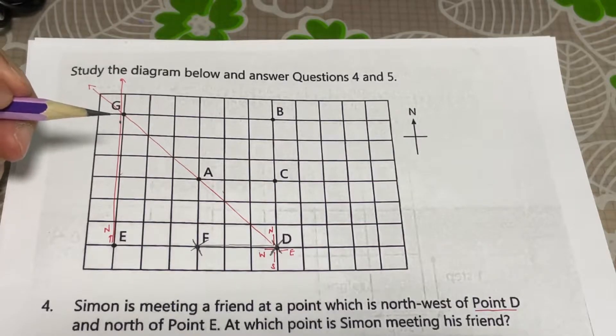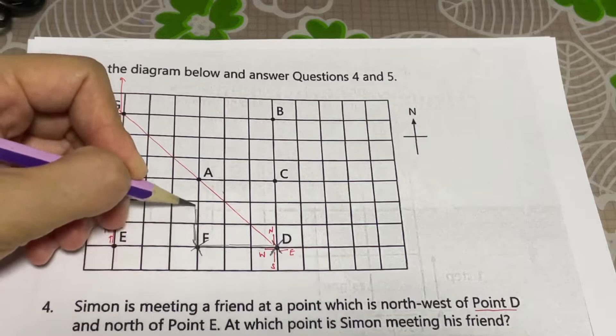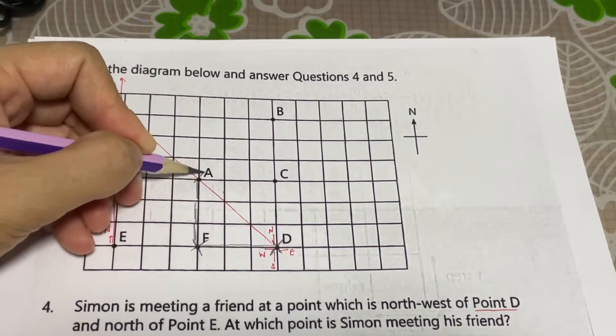Then, 3 steps to the north. North is upwards, right? So, 1, 2, 3. She would reach A.